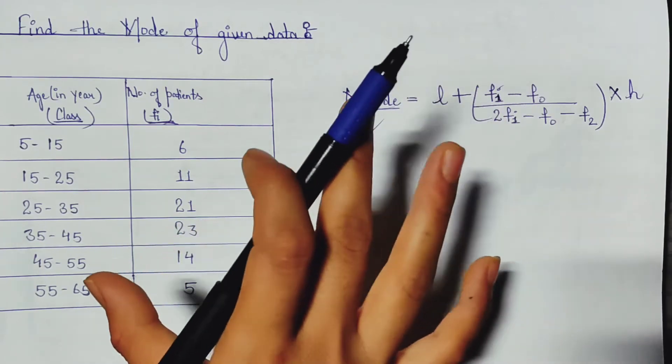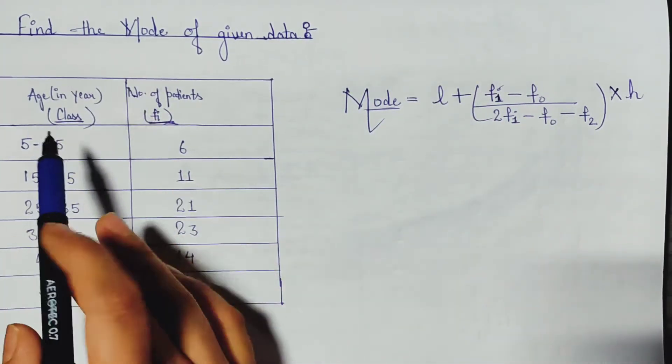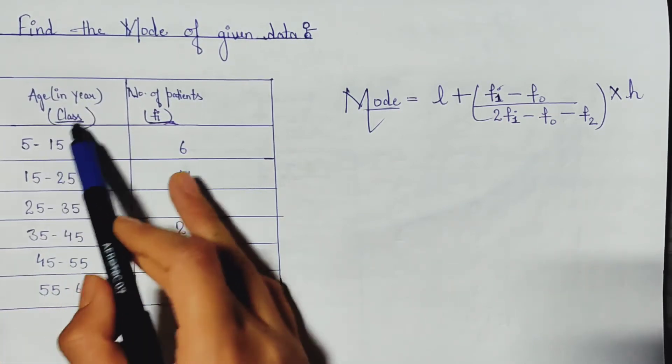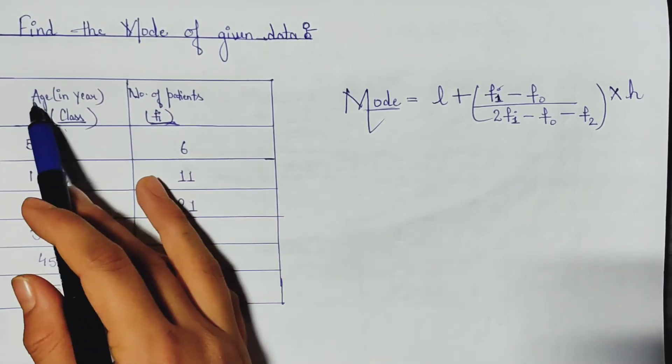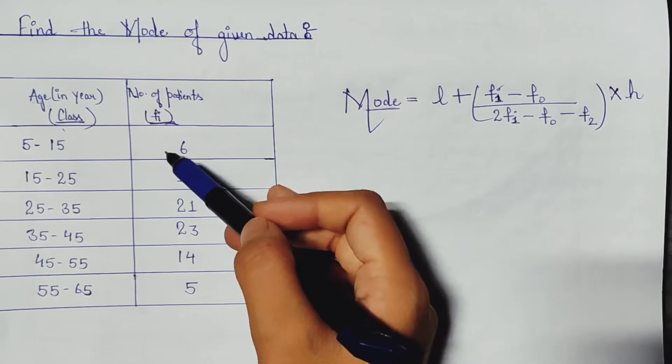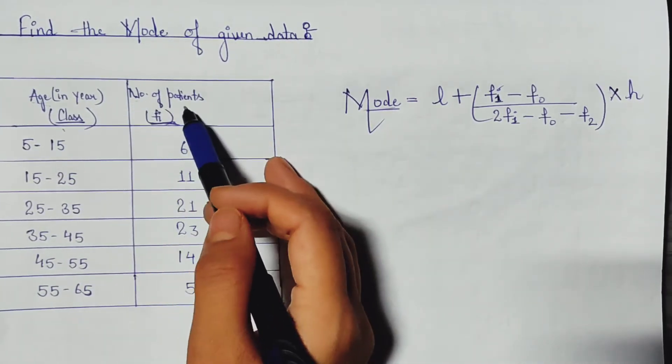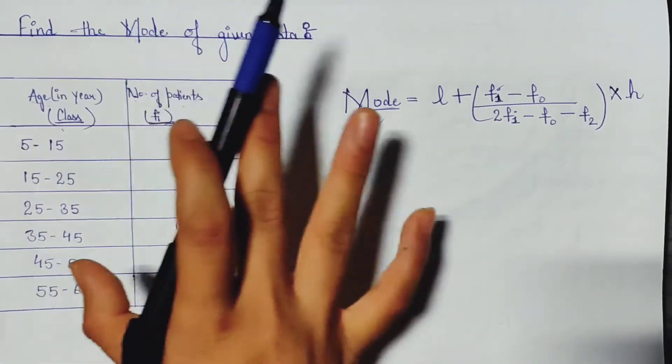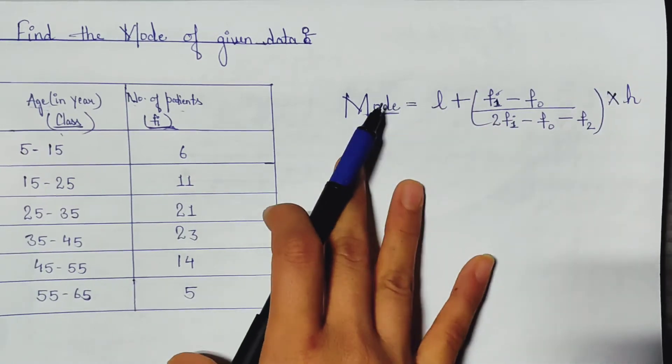Please be focused on understanding the concept. Here I am taking one example in which the age is given in years. This column is known as class interval, and in class interval the age is given. Now this column is known as frequency. In frequency, the number of patients is given. So whenever we need to find the mode of grouped data, these two columns are always given. Here the most important thing is the formula for finding mode.